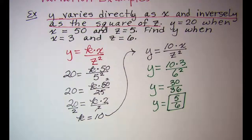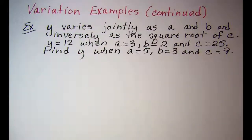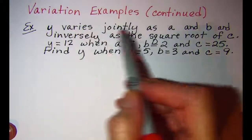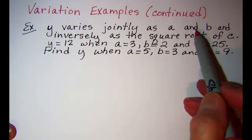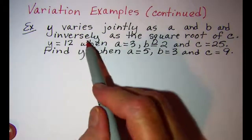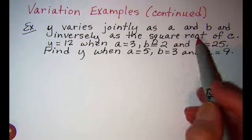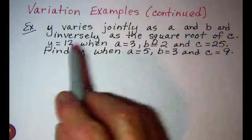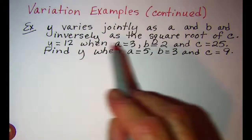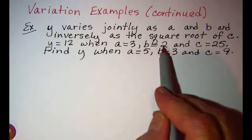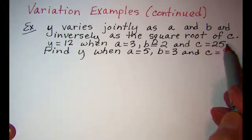Another example. y varies jointly as a and b and inversely as the square root of c. y equals 12 when a equals 3, b equals 2 and c equals 25.